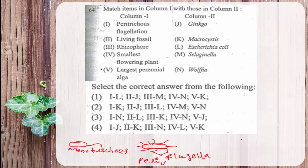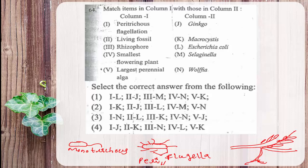Another term given is rhizophore. In Selaginella, which is a pteridophyte, where the stem branches, a colorless hanging branched structure arises. In Selaginella two types of leaves are present — some smaller and some larger in size. This bifurcated branched structure is called rhizophore.